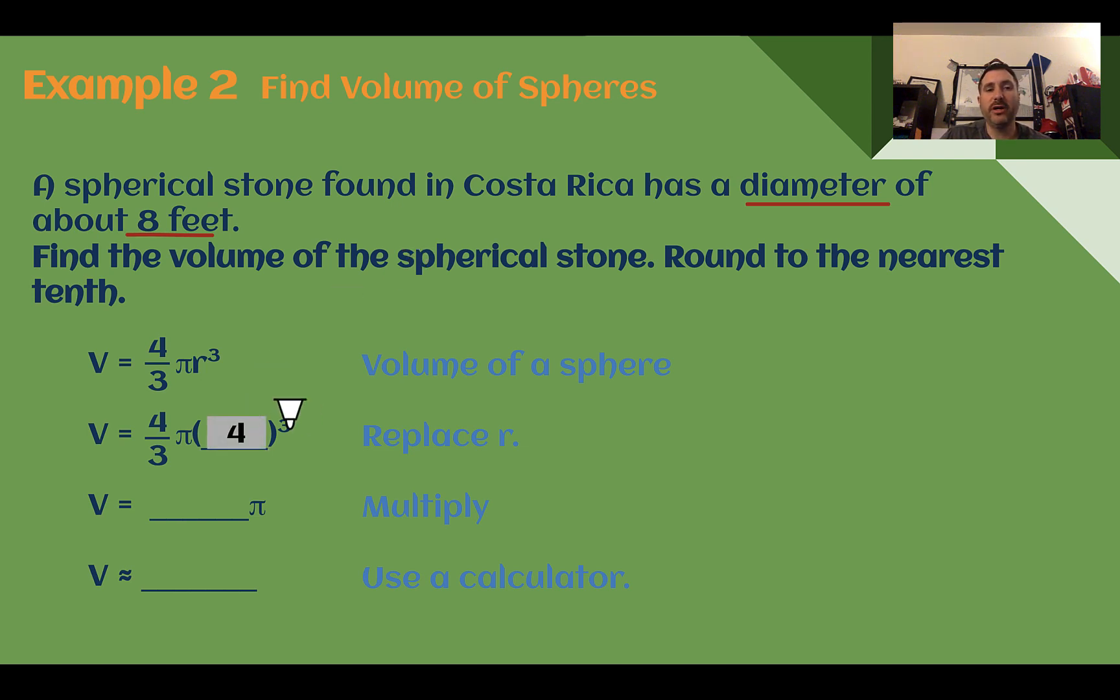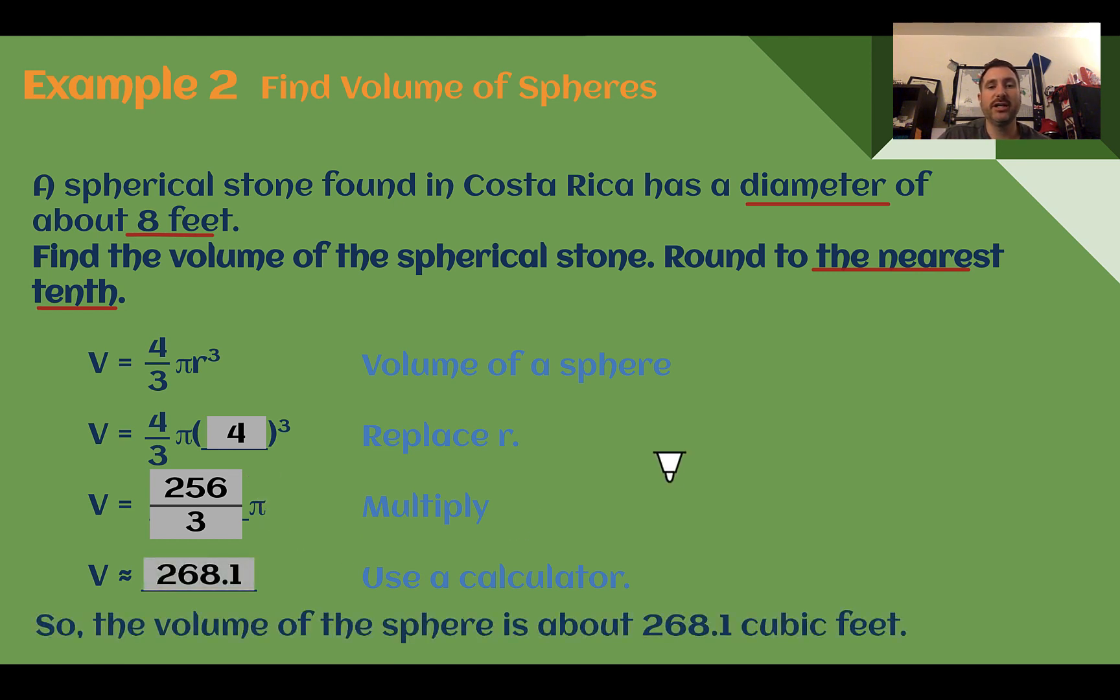4 to the third power is 64. 64 times 4 divided by 3 is 256 over 3. We'll leave it as a fraction for now. We're about to multiply with pi since it says to round to the nearest tenth. So 256 divided by 3 times pi. Using a calculator, our volume is about 268.1 cubic feet.